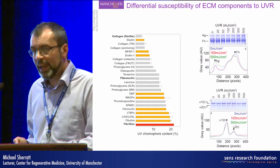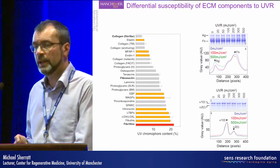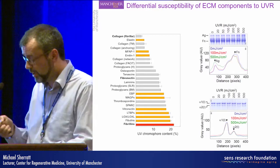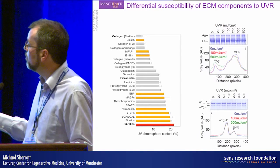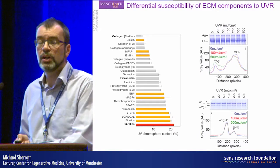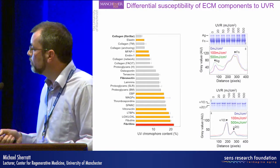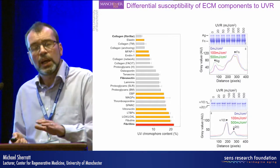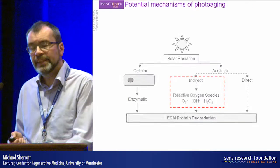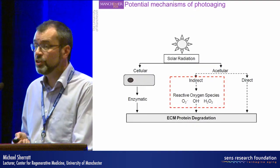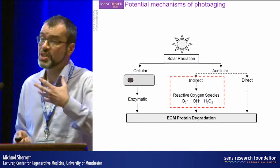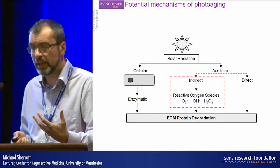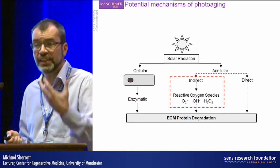This could be important biochemically. We know from the work of others that if you fragment fibrillin and put the fibrillin peptides onto human dermal fibroblasts, the fibroblasts respond by making matrix metalloproteinases. We also know from the work of Franco Ramirez and others that the remodeling in tissues such as the aorta, which is characteristic of Marfan syndrome — a condition due to mutations in fibrillin — is driven primarily by dysregulation of TGF-beta signaling.